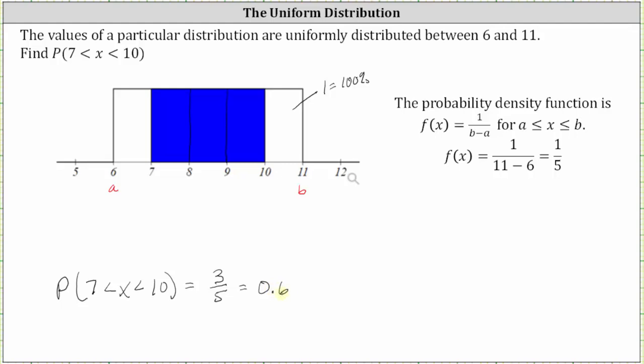Another way to determine the area of the blue rectangle would be to use the area formula base times height. To do this, we would need to find the height by determining the probability density function, which is f of x equals one divided by the quantity b minus a, where again, b is 11 and a is six, which gives us f of x is equal to one fifth.